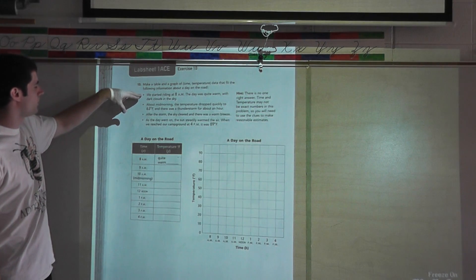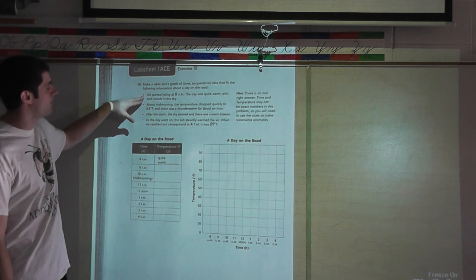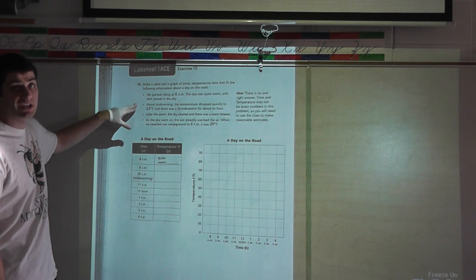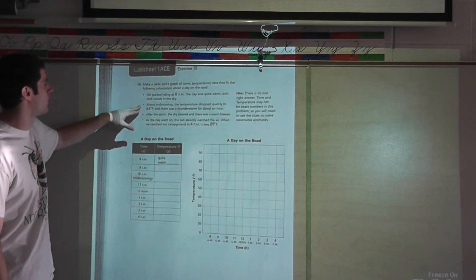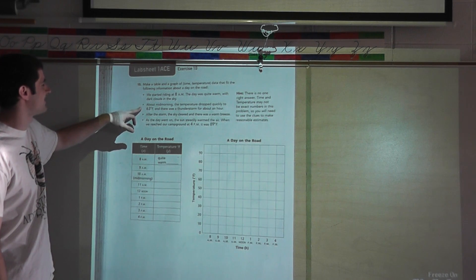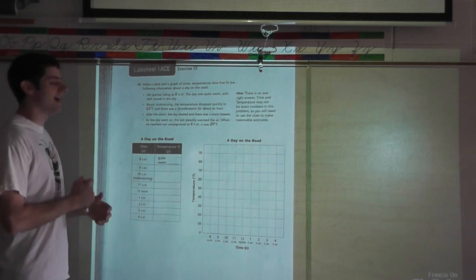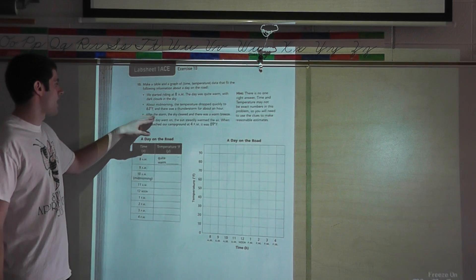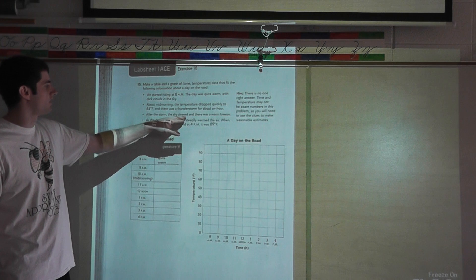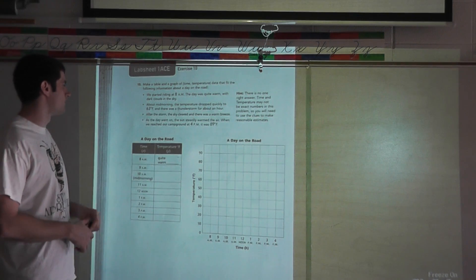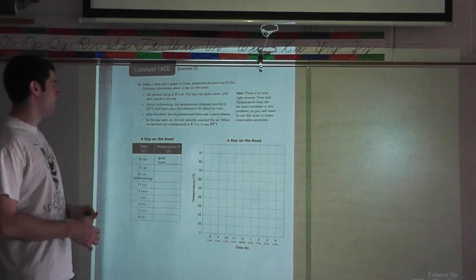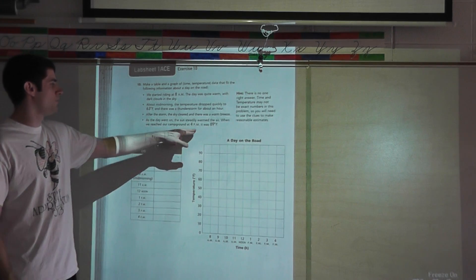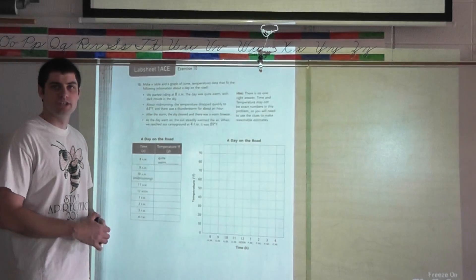In question 10, it says, make a table and a graph of time temperature data that fit the following information about a day on the road. So think back to our bike tours. The day was quite warm with dark clouds in the sky. About mid-morning, the temperature dropped quickly to 63 degrees and there was a thunderstorm for about an hour.